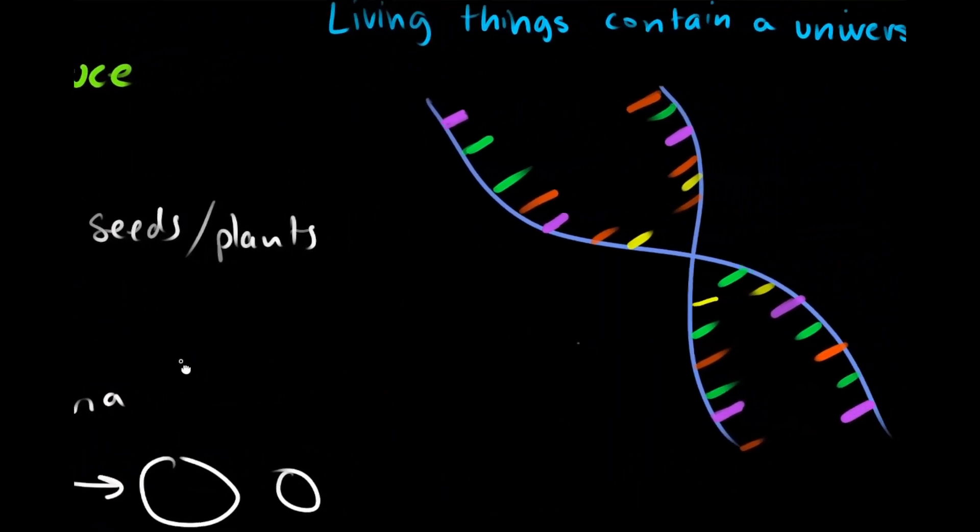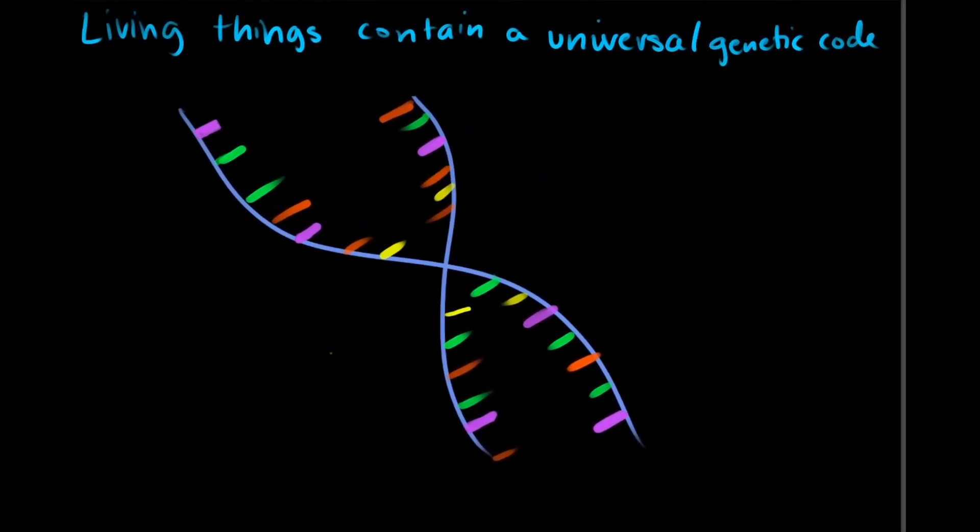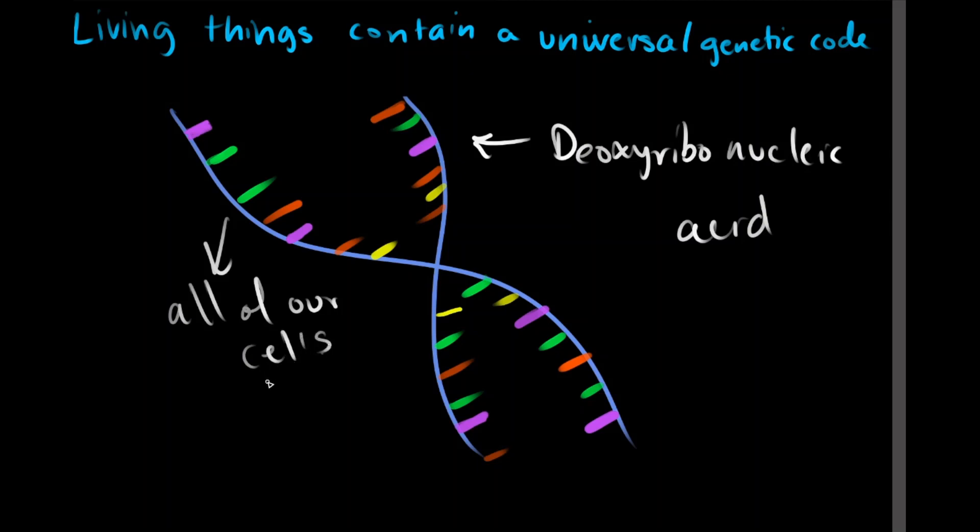As we go to the next characteristic of life, we can see that all living things contain what we call the universal genetic code. What is that code? Well, it's nothing but deoxyribonucleic acid, also known as DNA. This DNA is present within all of our cells, which can really go back and tie within the first characteristic.